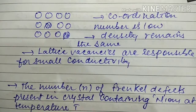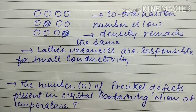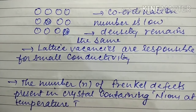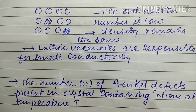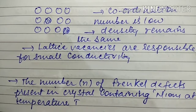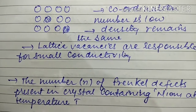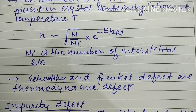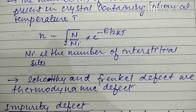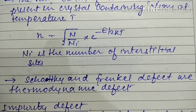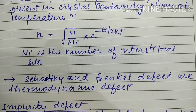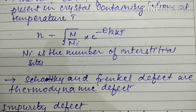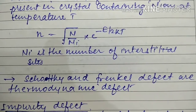Lattice vacancies are responsible for small conductivity in ions. The total number of Frenkel defects in a crystal containing N atoms and Nᵢ interstitial sites at temperature T is: n = √(N · Nᵢ) · e^(−E/2kT). Remember that both Schottky and Frenkel defects are thermodynamic defects.